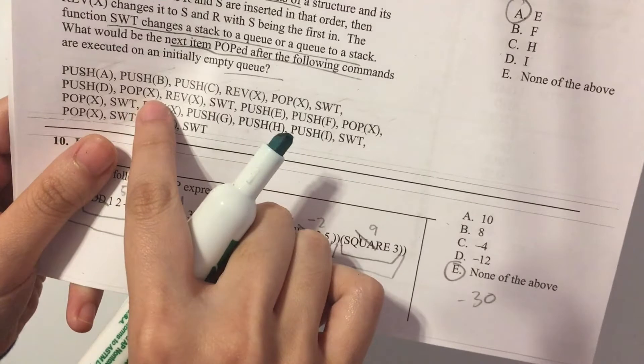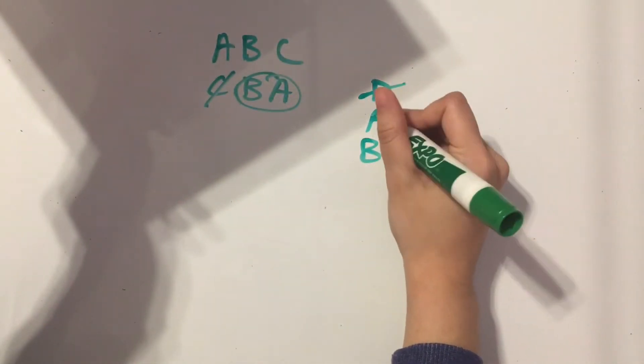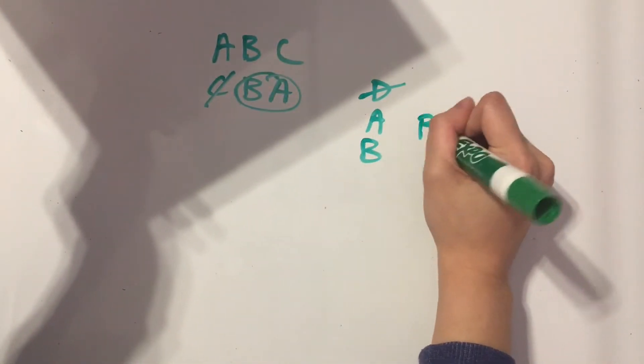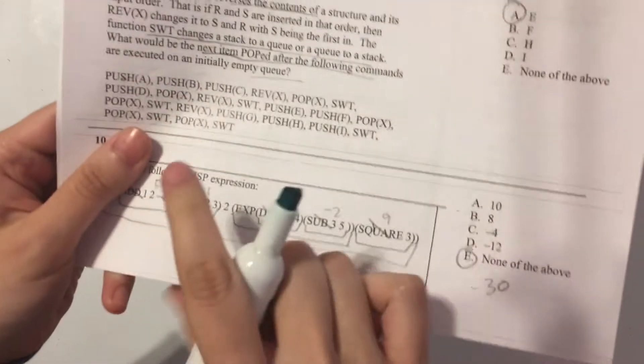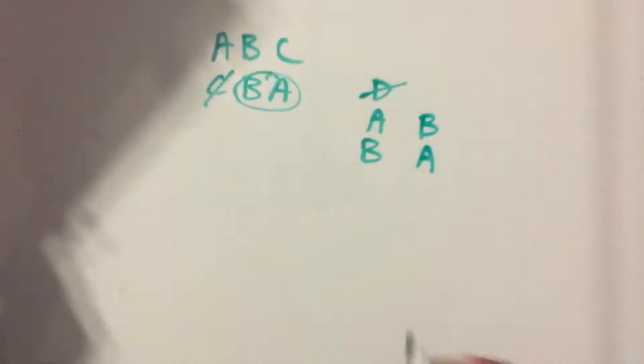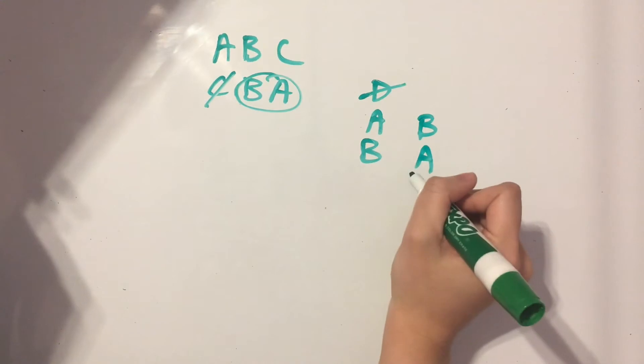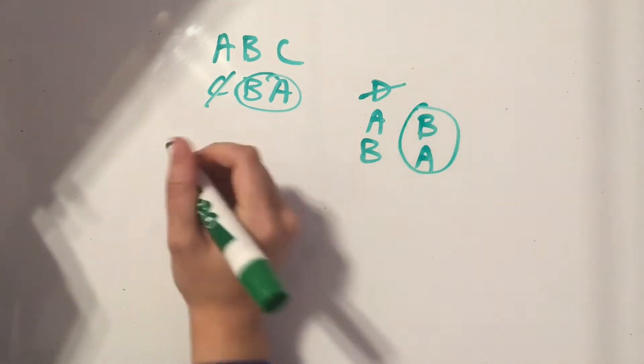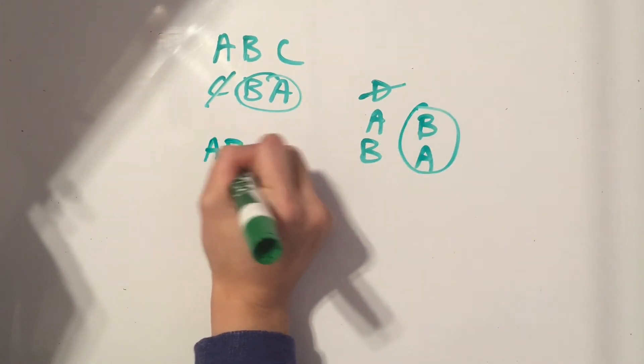And then we have a reverse. So instead of A on top and B on bottom, we'll have B on top and A on the bottom. And we need to switch again. So we're going from a stack of A and B to a queue of A and B.